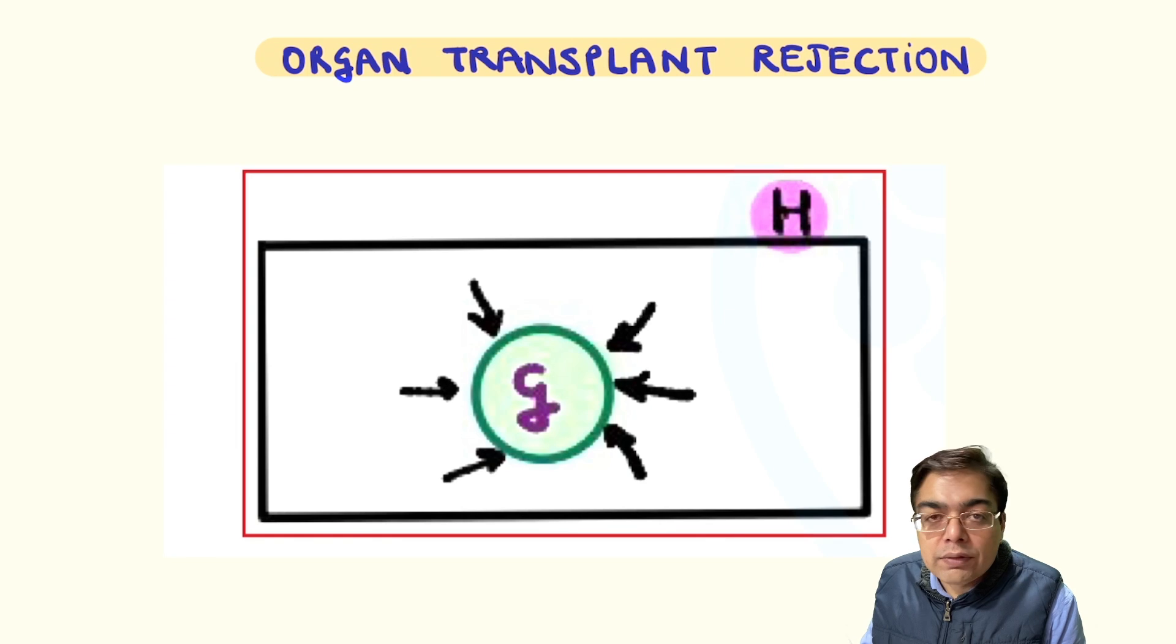You see, whenever there is going to be an activation of the immune system against the transplanted organ, this can result in development of organ transplant rejection. Now classically, the organ transplant rejection can take place by three mechanisms.